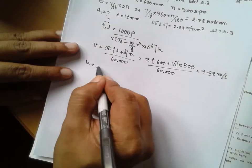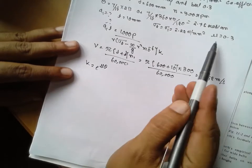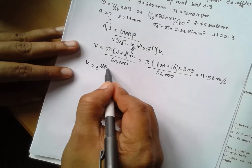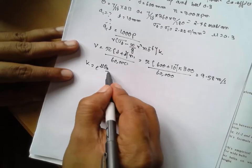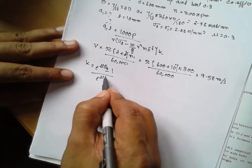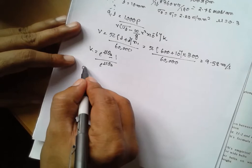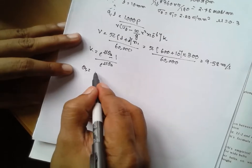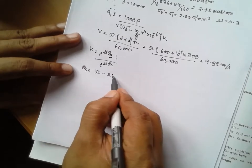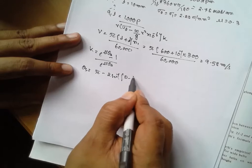K is equal to e raised to mu theta minus 1 divided by e raised to mu theta s. What is theta s? Theta s is pi minus 2 sin inverse d by d divided by 2c into pi by 180.